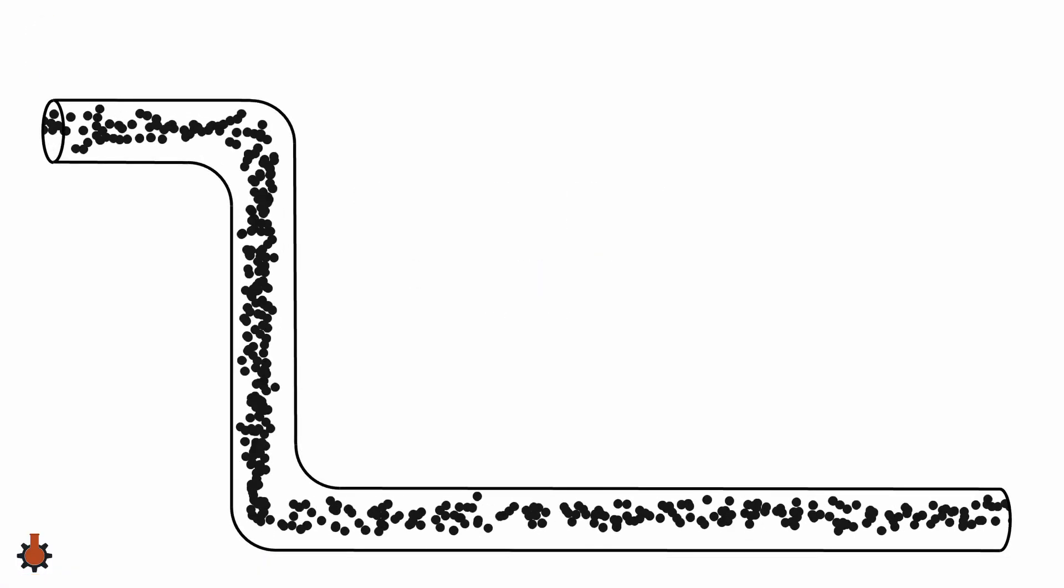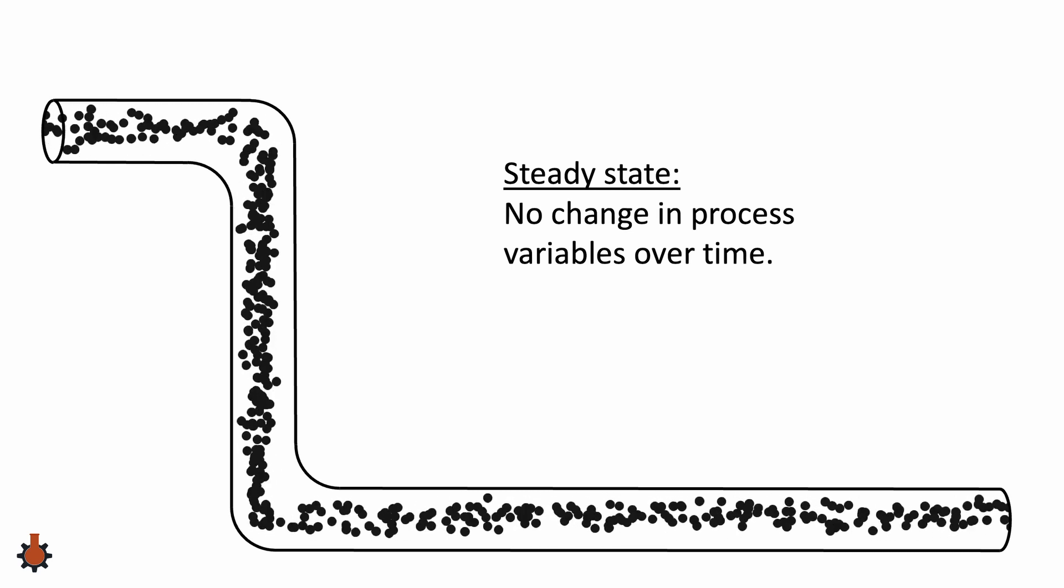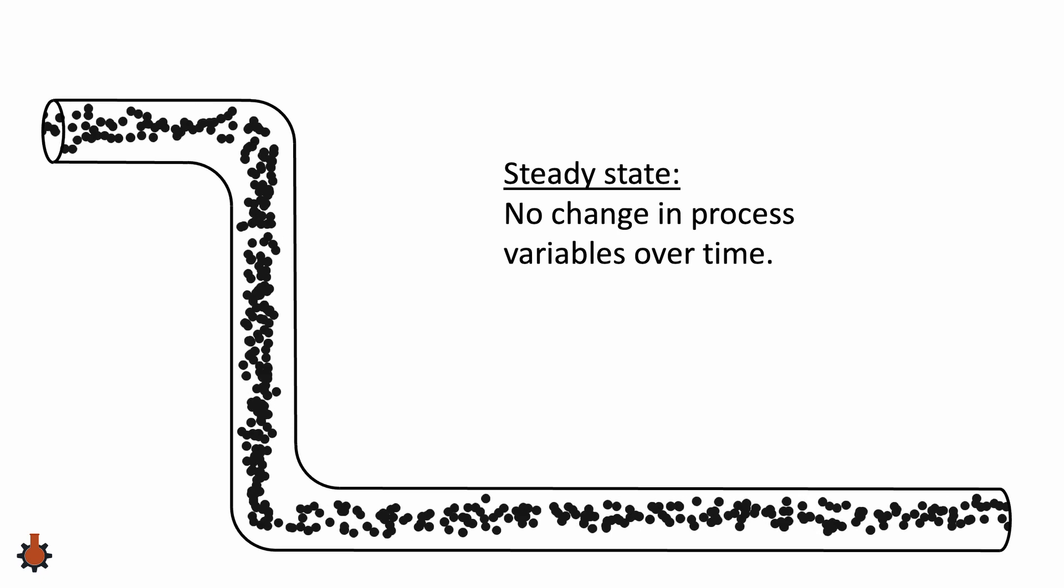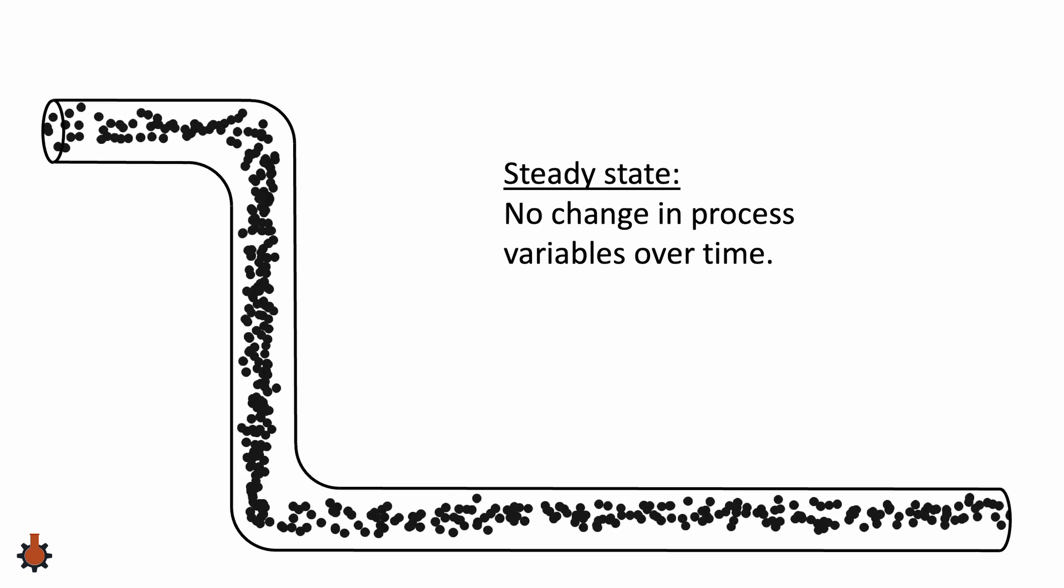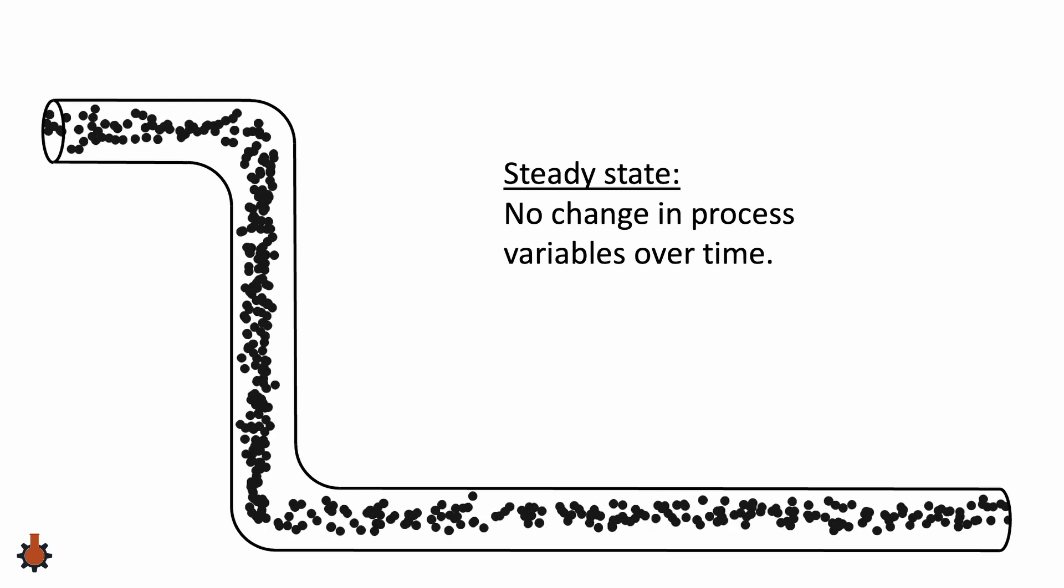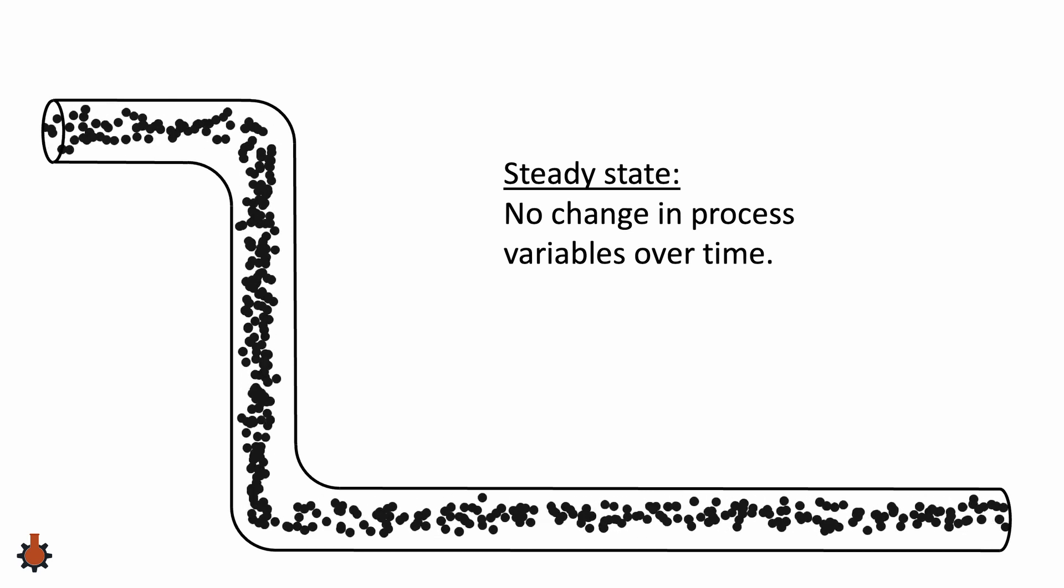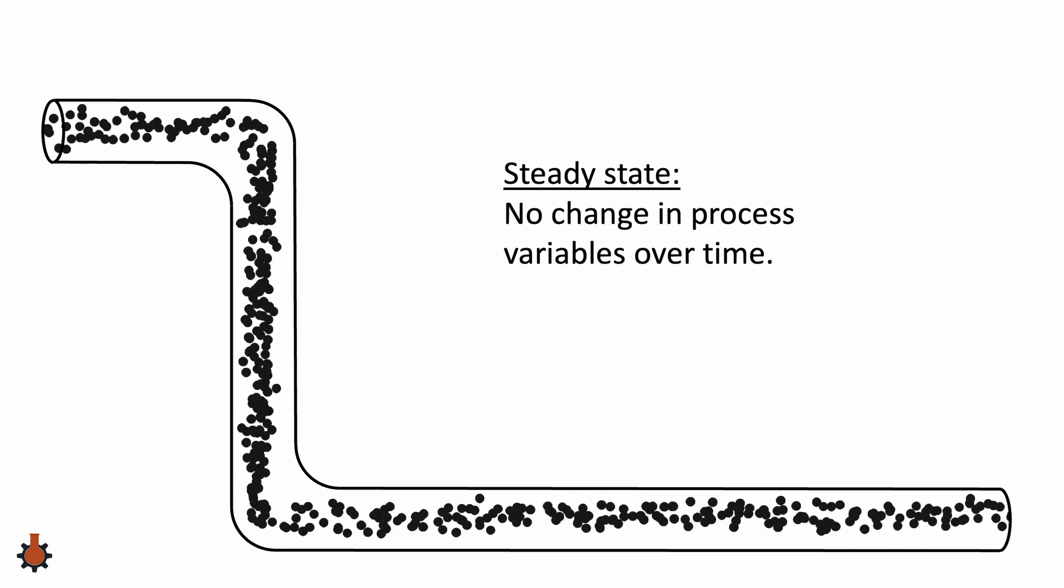The more correct definition of steady state is that process variables do not change with time. Shown here is a pipe with fluid flowing through it, where you can see a very repetitive motion of the dots floating across the screen. If we let each of these dots represent any process variable such as mass, energy, entropy, pressure, temperature, volume, chemical composition, pH, density, viscosity, or anything else I might have forgotten,